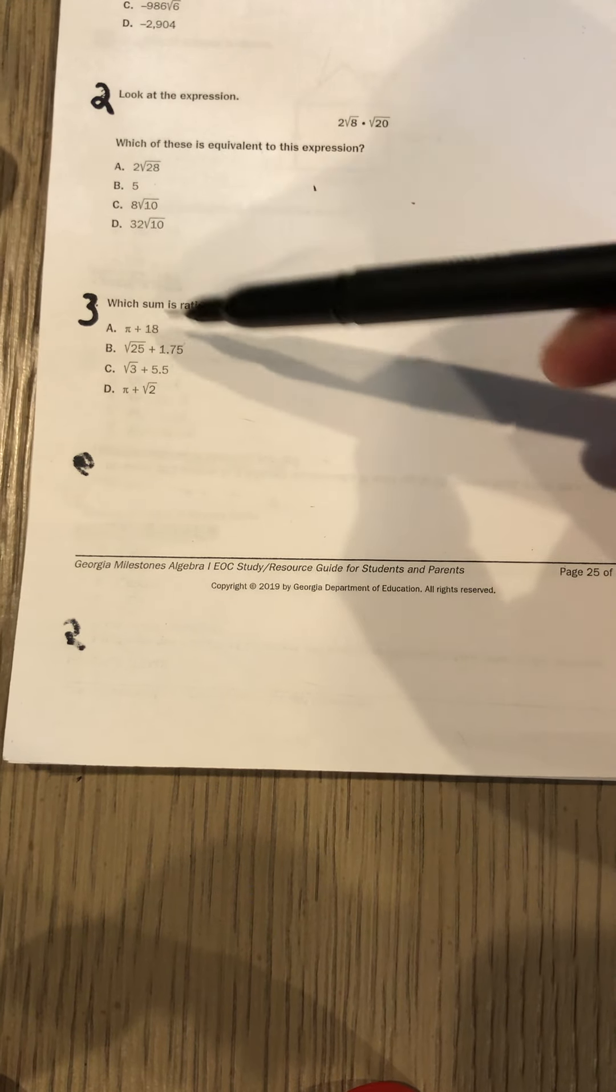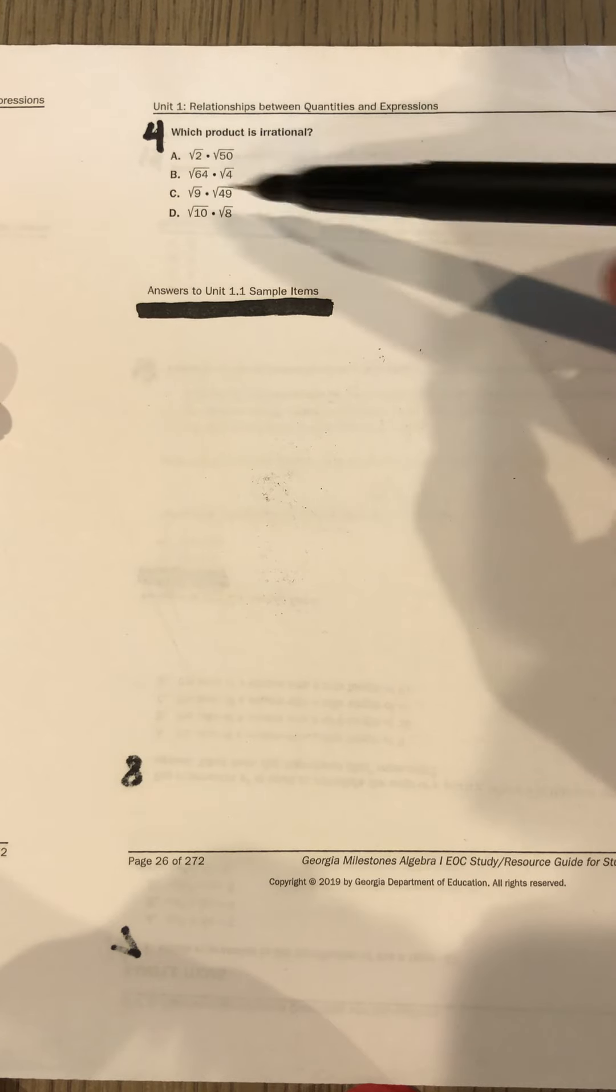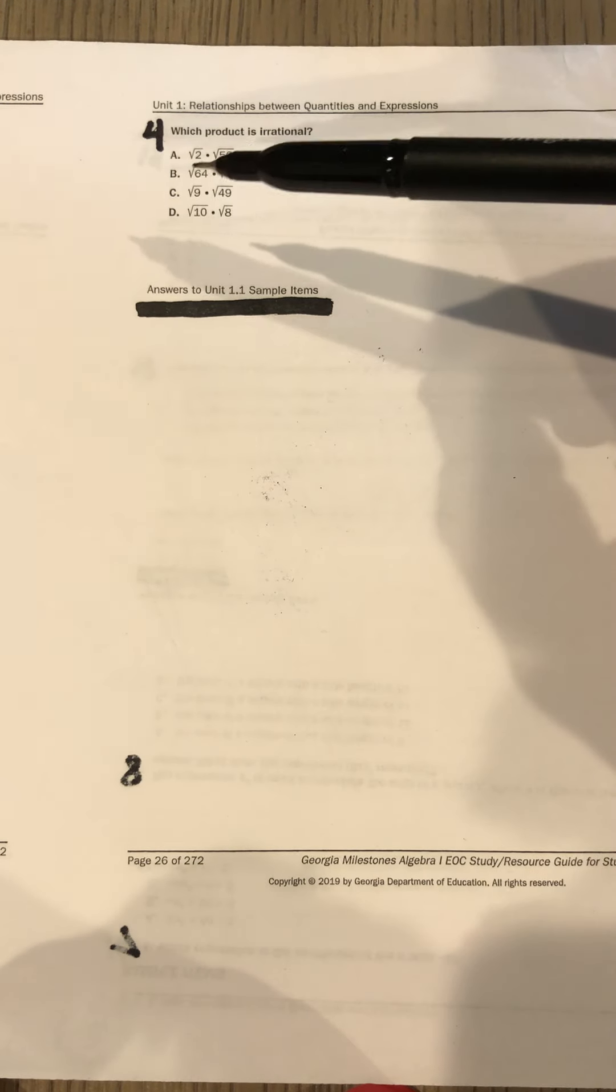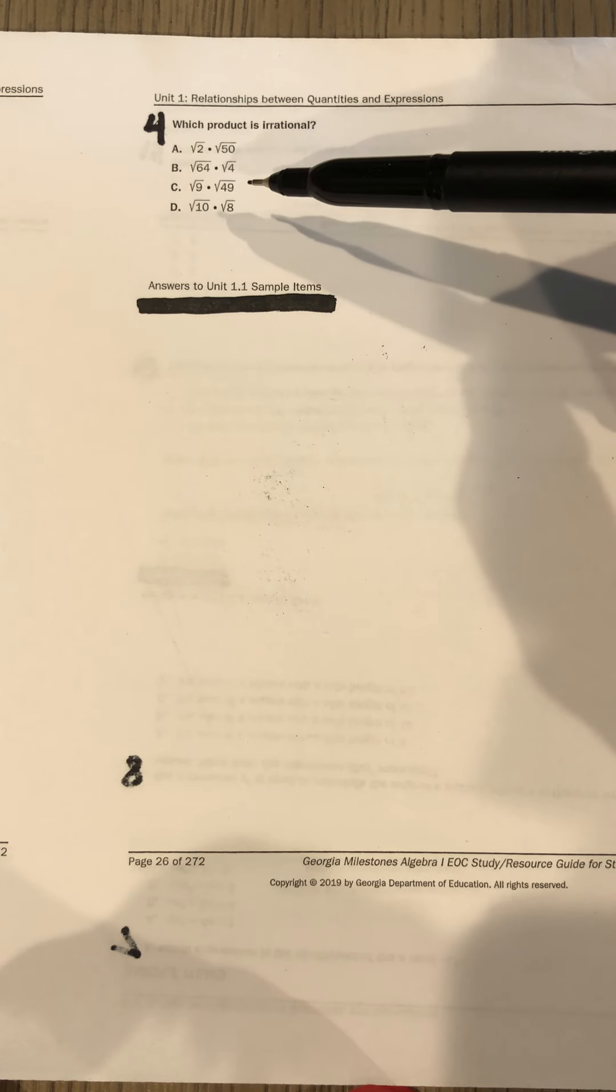Okay, number four: which product is irrational? Okay, so product means multiply. Same exact idea, except irrational is where I have a decimal value that goes on forever with no pattern. Okay, moving on. Hopefully your day is going fantastic.